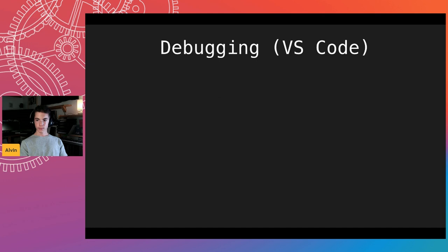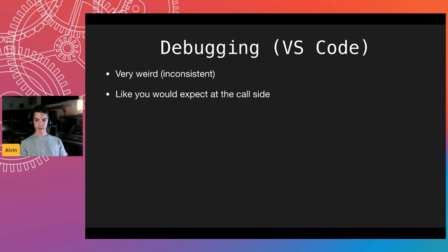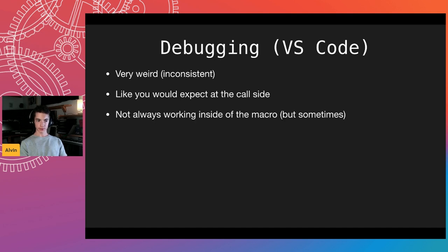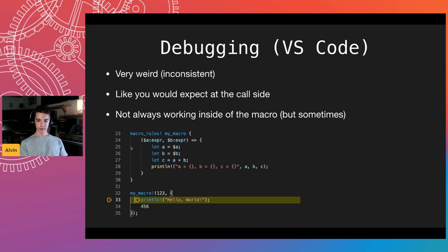Debugging macros in Visual Studio Code is pretty weird — it's very inconsistent. I tried some examples and sometimes it works, sometimes it doesn't. It works very well at the call site: if you pass a statement inside the macro, everything works well. But it doesn't always work when you try to debug inside the macro. For example, setting a breakpoint at line 25 doesn't work, but line 33 works fine.